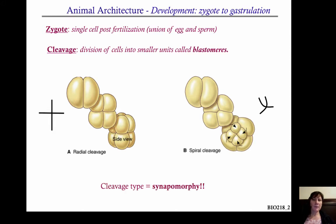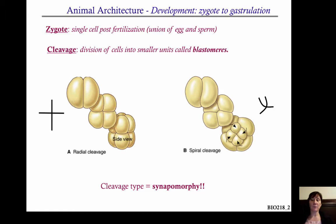The type of cleavage — whether it's radial or spiral — is a synapomorphy. It's a key characteristic that diagnoses two different groups of organisms that I'll introduce to you in a moment.